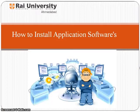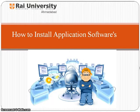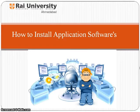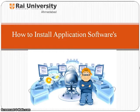How to Install Application Software. Application software is a set of one or more programs designed to carry out operations for a specific application. Application software cannot run on itself but is dependent on system software to execute. Examples of application software may include accounting software, media players, and office suites. Let us study in detail how these software are installed in a laptop.